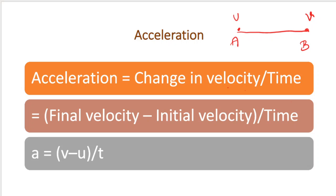Let us see the mathematical expression for acceleration. Consider a body moving from point A to point B. At the starting point, the velocity is U; at the end point, the velocity is V. Acceleration is defined as change in velocity divided by time, which means final velocity minus initial velocity divided by time. So acceleration A = (V − U) / T.